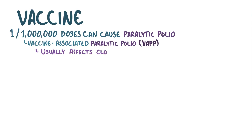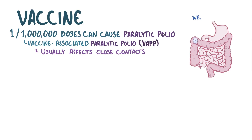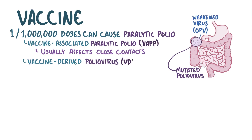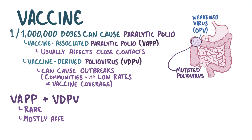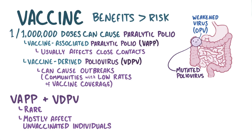VAPP usually affects close contacts, like someone that lives in the same home. But sometimes the weakened virus reverts to a form that can cause vaccine-derived poliovirus, or VDPV, which not only affects close contacts, but can cause outbreaks of poliomyelitis in communities that have low rates of vaccine coverage. VAPP and VDPV are both worrisome, but the events are relatively rare and mostly affect unvaccinated individuals, so the benefits of the polio vaccine outweigh the risks, and polio vaccine is recommended.